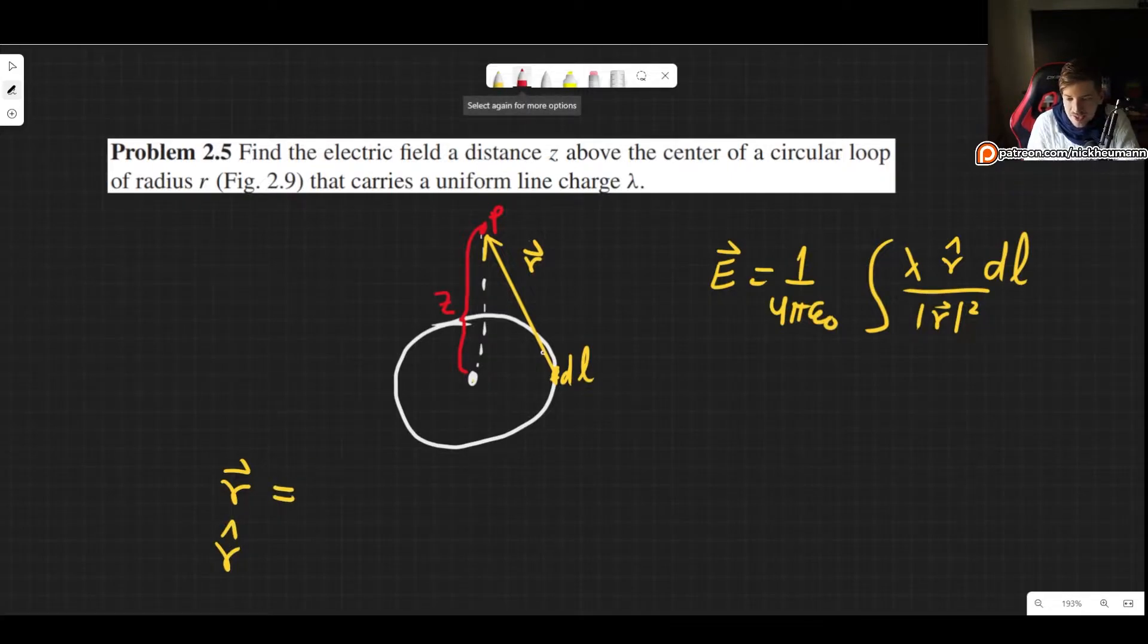The first step is to find what this vector r is. The easiest way is you start off in whatever point you choose and then you need to find a way of getting to your destination. A vector is simply an indication: how do I go from point A to point B? You start here and then we need to move towards the center and then we need to move upwards at distance z.